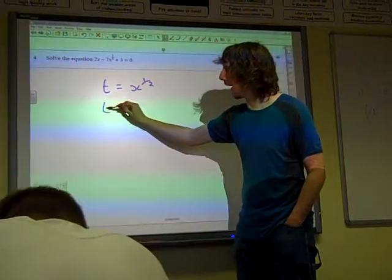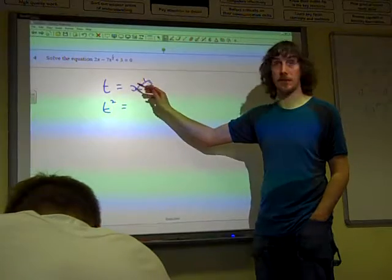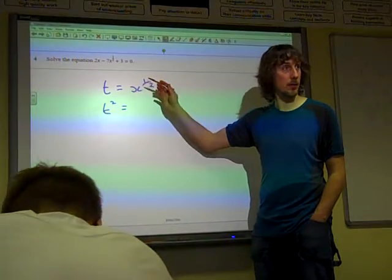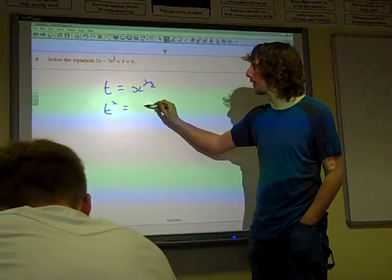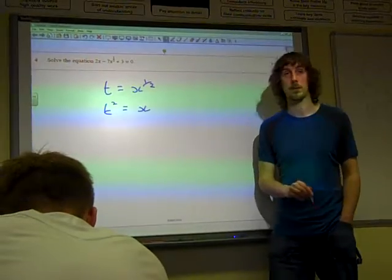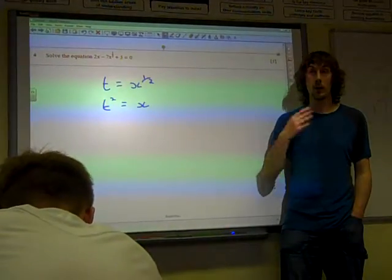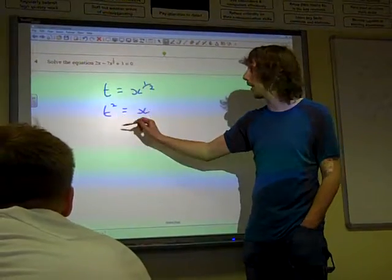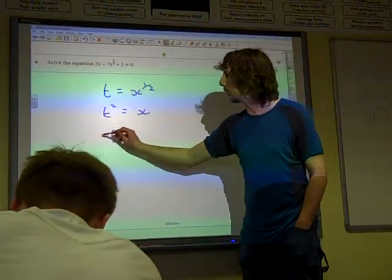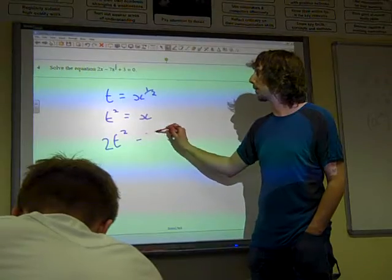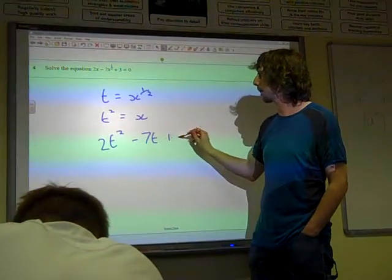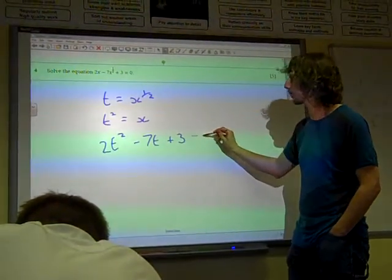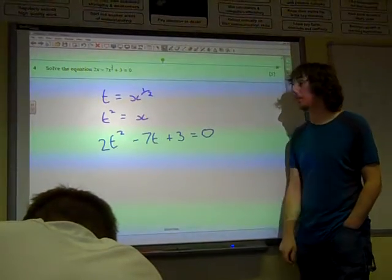And so we're going to replace the middle term with that single letter. If that's what we've done, then t squared—well if you square x to the half, you get x. So t squared is just x. So before we've done anything else, we're now going to rewrite this equation we're supposed to solve as being 2t squared minus 7t plus 3 is equal to 0.